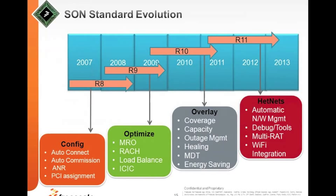Outage management is extremely important for a highly available network. There's the healing aspect — when you diagnose a fault, you automatically resolve it. There's minimization of drive testing and energy savings for a low-power, low-cost efficient network. Release 11 integrates this into a heterogeneous network configuration with automatic network management, debug tools, multi-RAT support, and Wi-Fi integration.